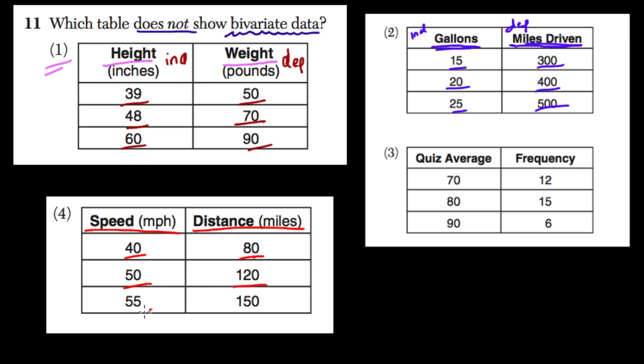And then, when I go 55 miles per hour, I'm able to cover 150 miles. So you see that the more mile per hour, or the higher your speed, excuse me, the more distance you can actually cover. The only one here that's not bivariate is this table, table 3.